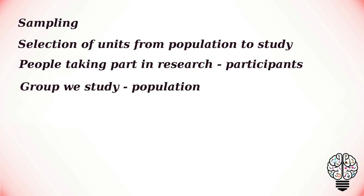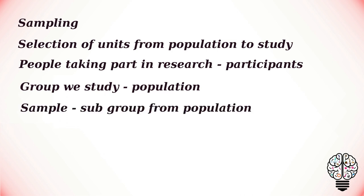In some types of research the target population might be as broad as all humans, but in other types of research the target population might be a smaller group such as teenagers, preschool children, or people who misuse drugs. It is more or less impossible to study every single person in a target population, so psychologists select a sample or subgroup of the population that is likely to be representative of the target population we are interested in.